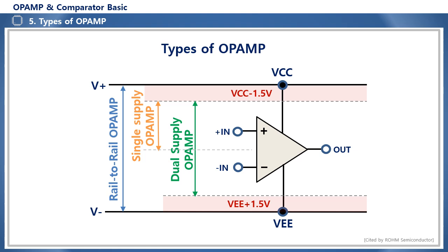A dual power supply op-amp can also be used with a single power supply depending on the biasing method. As power saving has become important, the number of circuits that operate at low voltages has increased. When VCC drops to 3.3 volts, single supply op-amps were limited to input and output in a voltage range 1.5 volts lower than VCC. But rail-to-rail op-amps that perform full swing from VCC to V- have emerged, and such op-amps that can be applied under low voltage conditions are also called full swing op-amps.